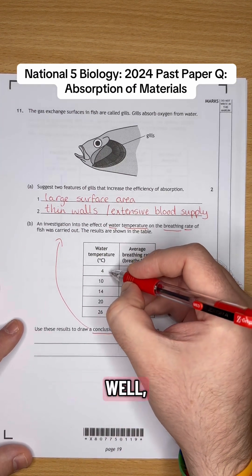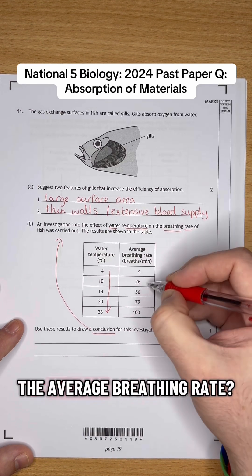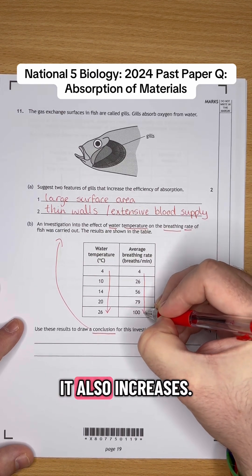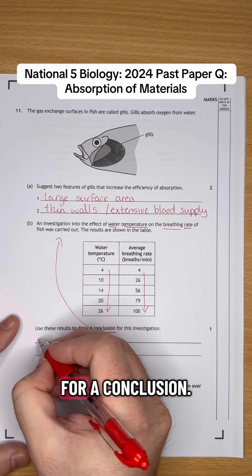So what happens? Well, as the water temperature increases, we can see it increasing in this table here. What happens to the average breathing rate? It also increases, okay? Those numbers get bigger. So that's all we put for our conclusion.